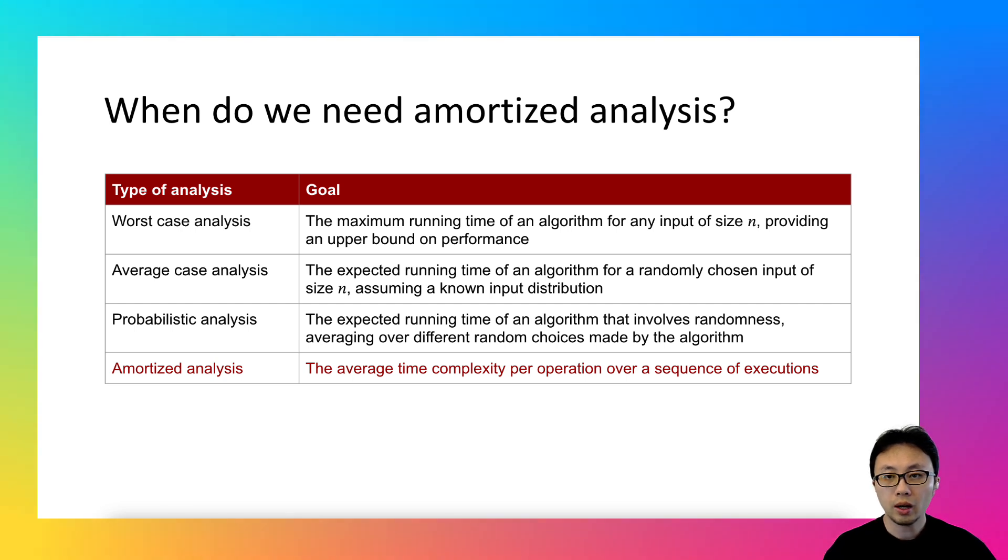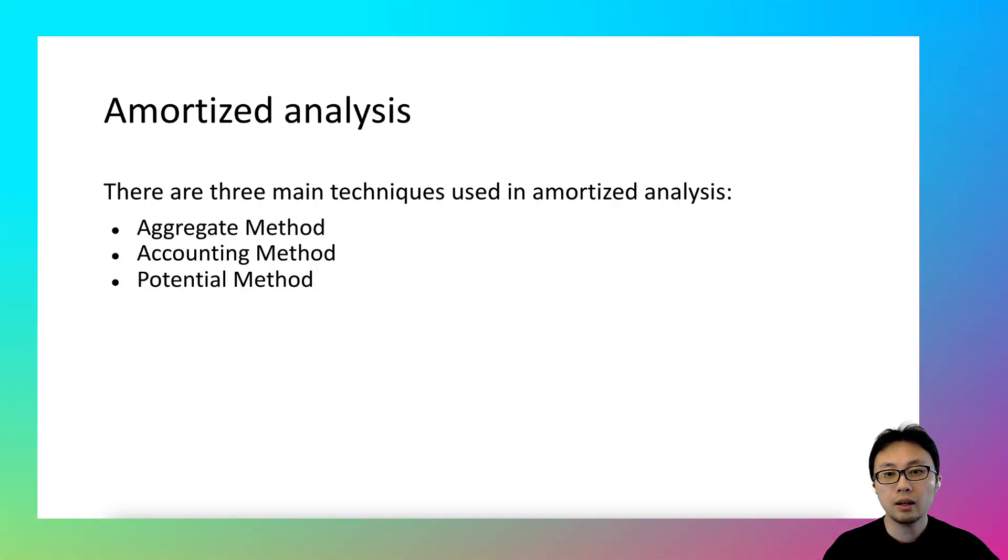So in comparison to other types of time complexity analyses, the amortized analysis has a more targeted application. It focuses on understanding the average time complexity of a sequence of operations. Now you know what the amortized analysis is and when it can be useful. Let's talk about how it is done.